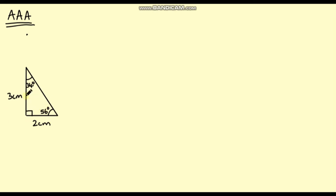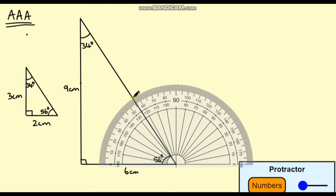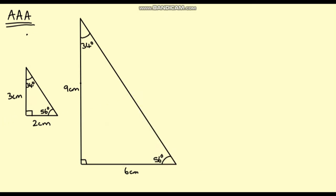Let's draw another triangle and I'm going to scale this triangle up by a scale factor of 3. I'm going to make the base three times as big — so that's going to be 6 centimeters — and the height three times as big, so that's going to be 9 centimeters. With the protractor on the point, the angle is exactly 34 degrees, and the other angle is also exactly 56 degrees. So if someone says they've got two triangles with the same angles, does that mean they are congruent? No, not necessarily — one could just be a scaled up version of the other. So what we can say is that AAA is not a congruency axiom.